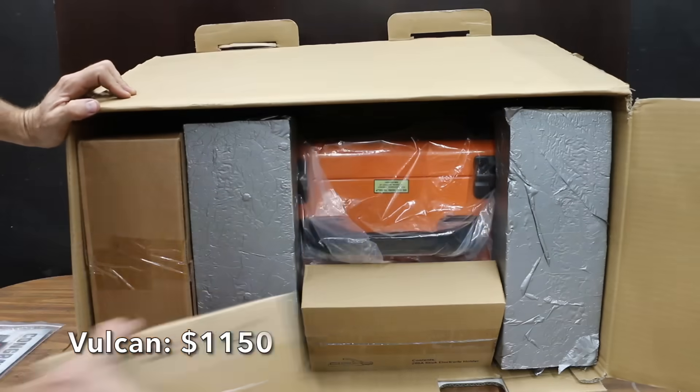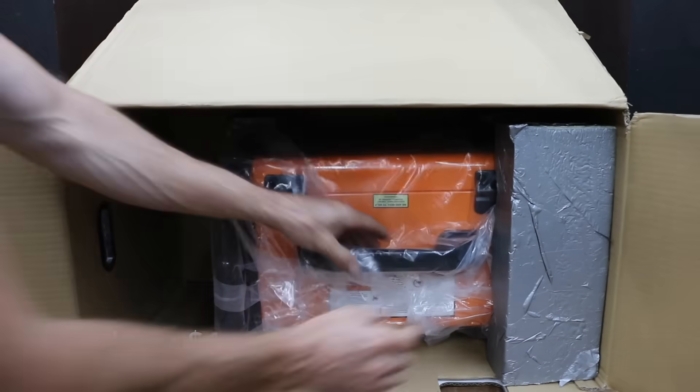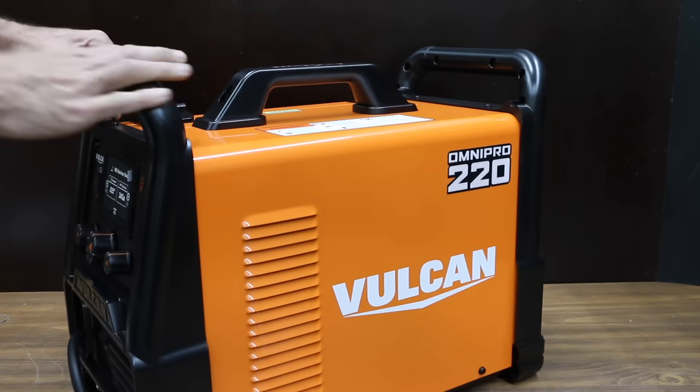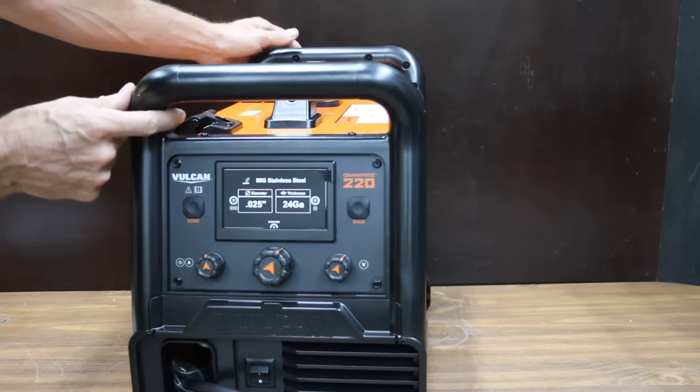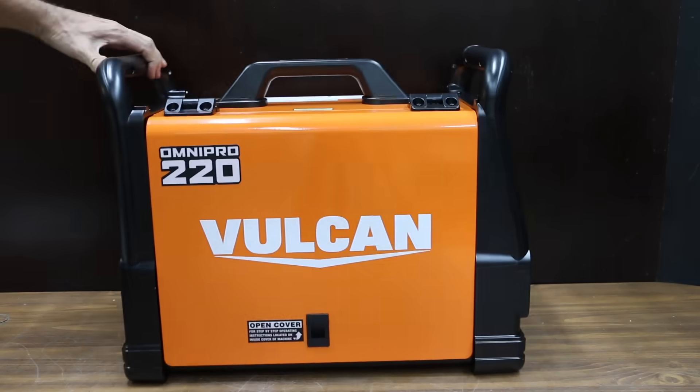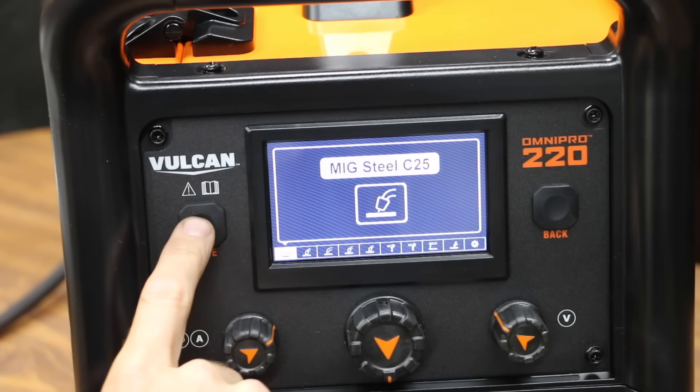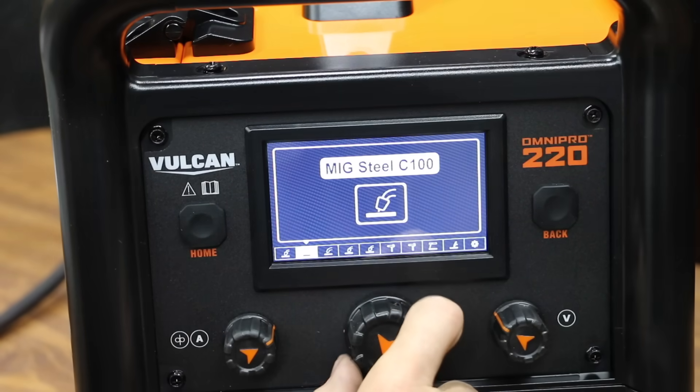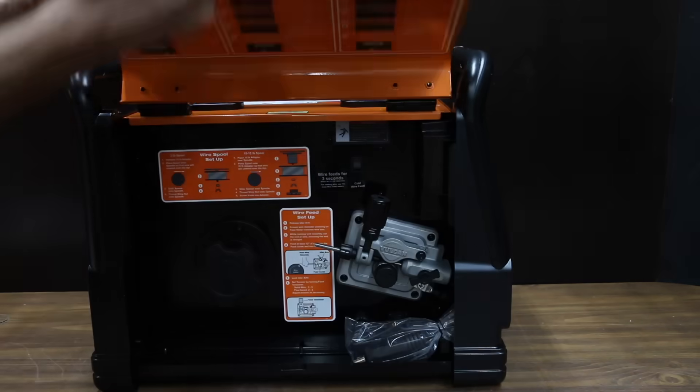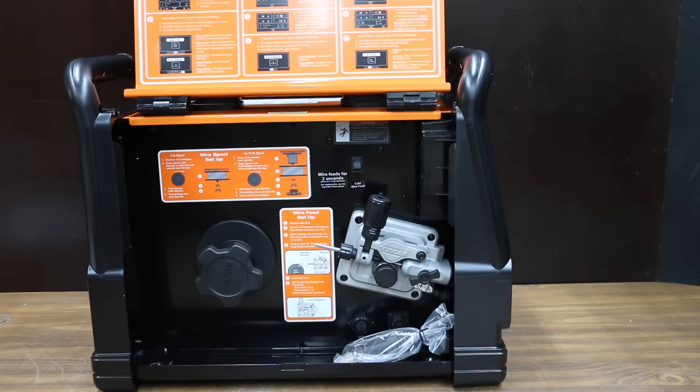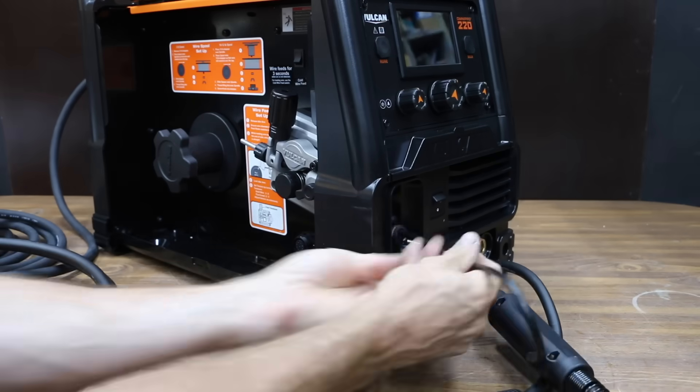At a price of $1,150 is this Vulcan Omnipro 220, which is sold at Harbor Freight. It claims to be a top-of-the-line multi-process welder. It can handle MIG, stick, TIG, and flux-core welding. For TIG and stick welding, up to 175 amps. Includes 132 preloaded welding programs for easy setup. 120 or 240-volt input. Inverter technology for highest quality output and maximum efficiency. The Vulcan is made in China.